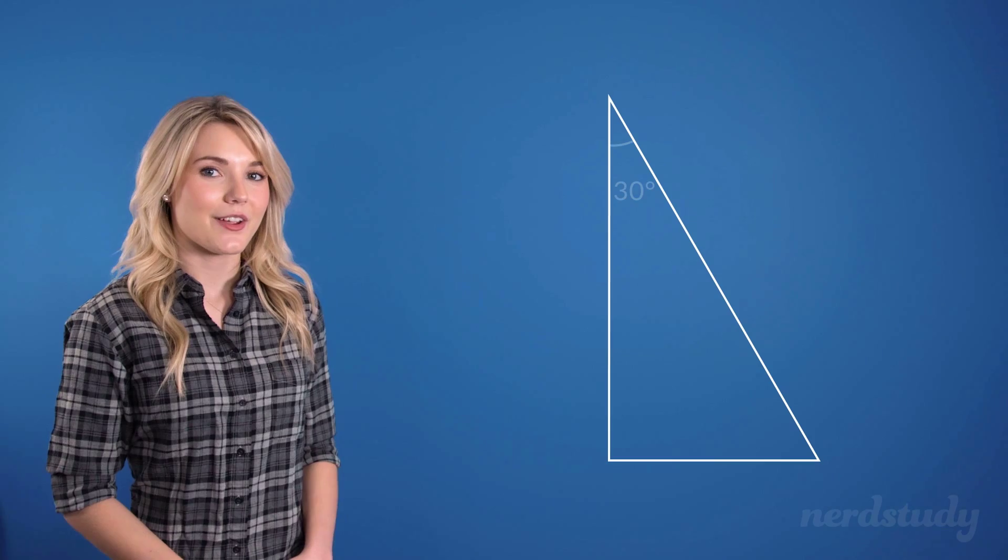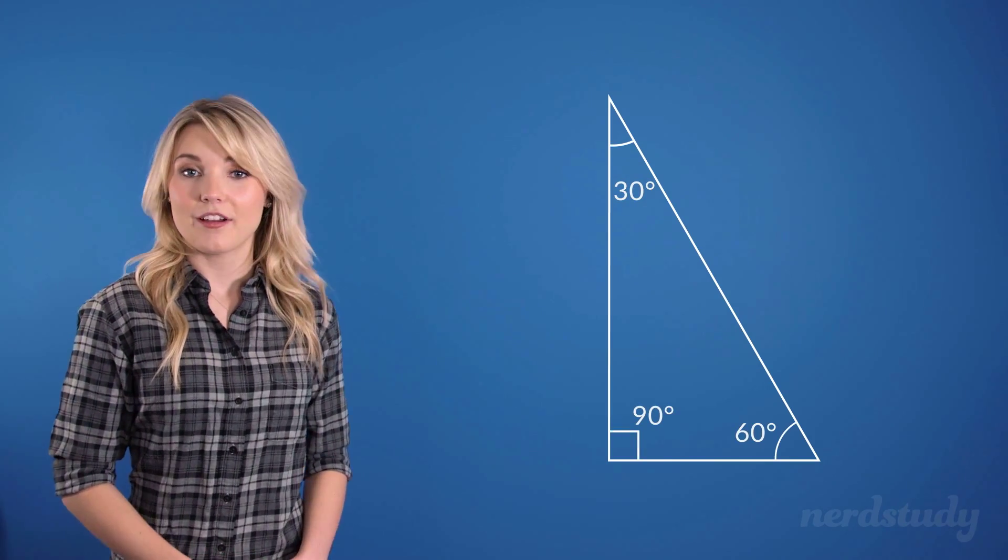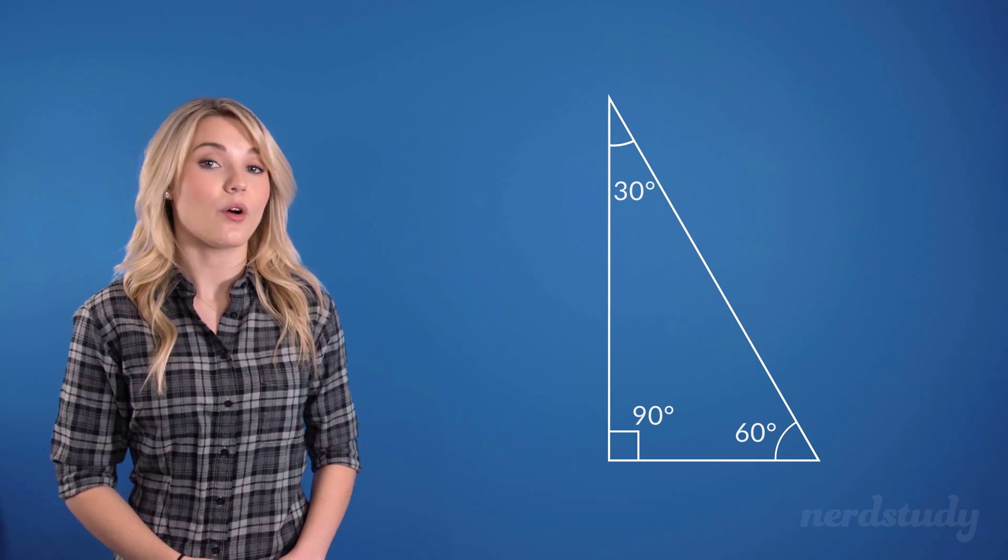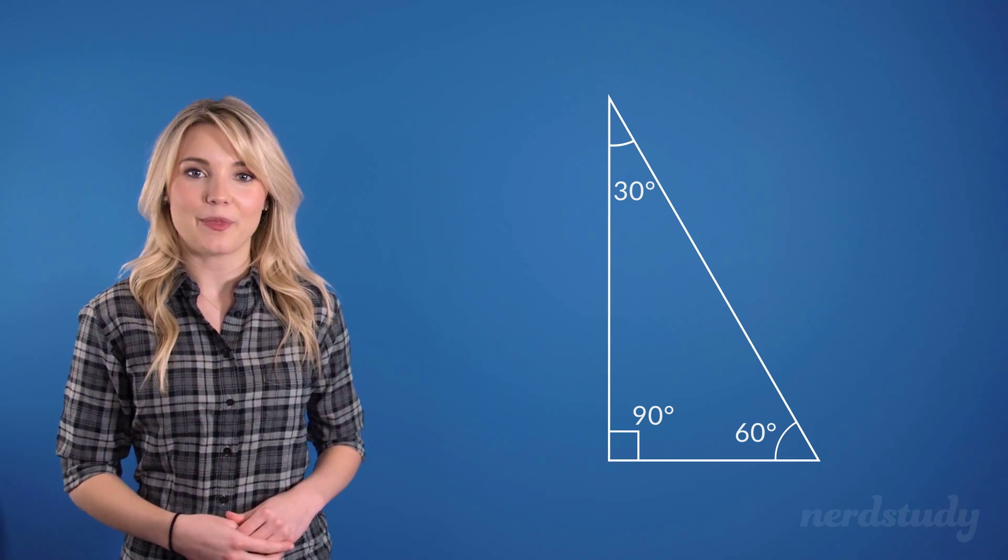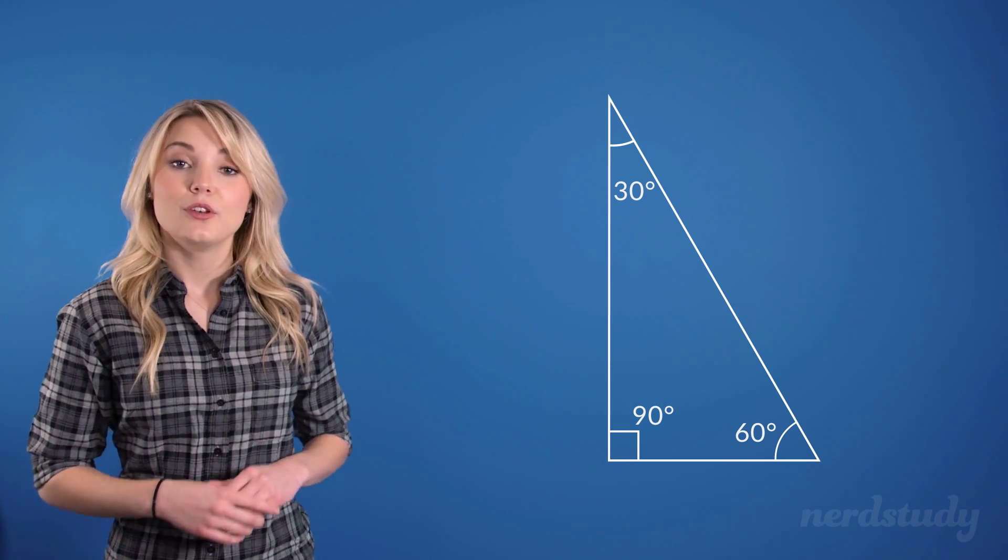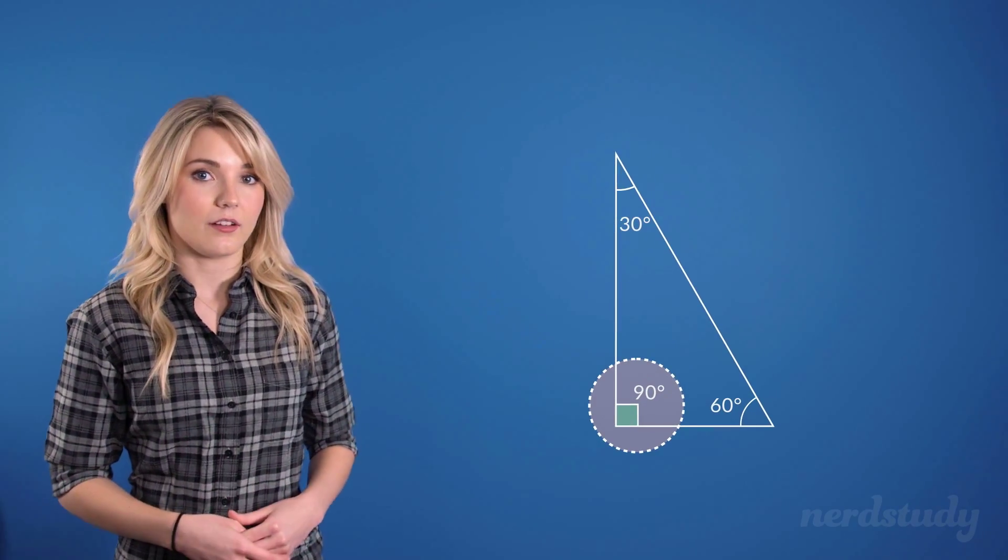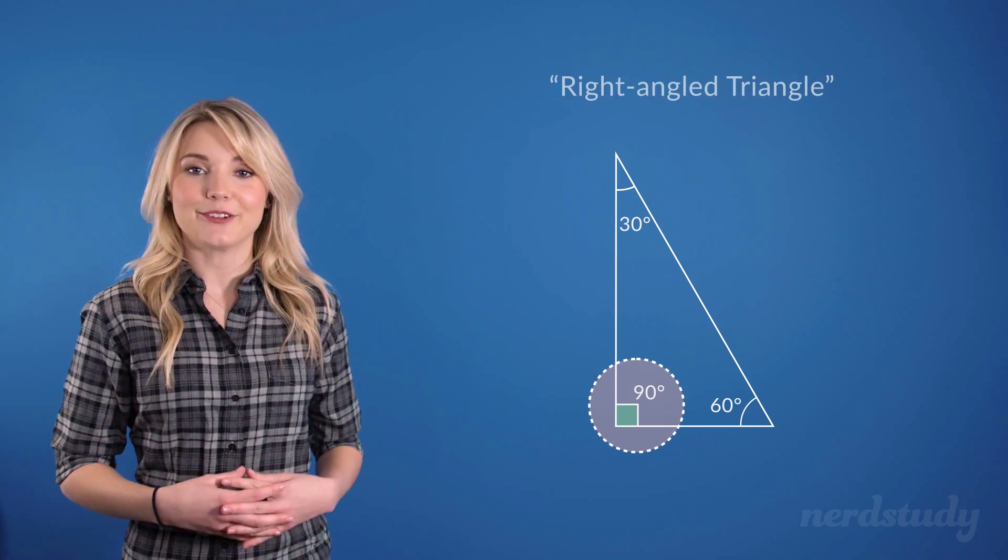So here is the 30-60-90 triangle. The 30-60-90 triangle is seen over and over again throughout many years of math, so it's definitely something worth memorizing. Note that since one of the angles is a 90-degree angle, this is indeed a right-angled triangle.